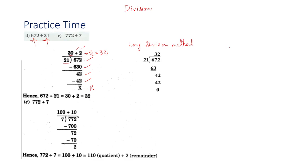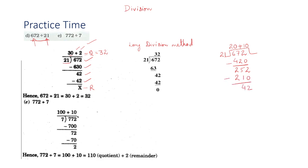Let me explain the same question 672 one more time using this method. I have written 672 and 21 here. 21 times 20 equals 420. Subtract 420 from 672 and you get 252. Now add a plus sign and multiply 21 by that number so the product is less than 252. I'll go for 10, so 21 times 10 equals 210.